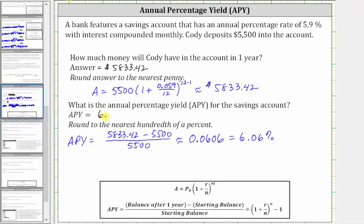So because the APY is 6.06%, an account that pays 6.06% simple interest after one year would have the same return as the given account that pays 5.9% interest compounded monthly.